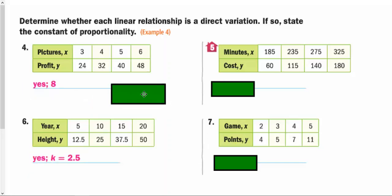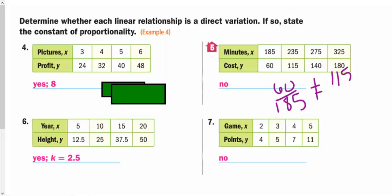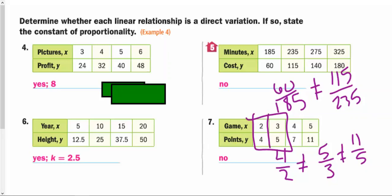For the fourth and sixth one, we get that they are direct variations. With a constant of proportionality of 8 and 2.5 respectively. However, on 5 and 7, we get that they are not direct variations. So, I think the yes is fine. We can look and divide and get all of them the same. But in 5 and 7, I want to look at the no's. So, if we look at 60 over 185, we realize that that is not the same as 115 over 235. Those numbers, one's roughly a little less than a third. And the other one's almost a half. So, we realize that those two aren't the same. In fact, number 5 is not even linear. If we do the same for number 7, we realize that 4 over 2 is definitely not the same as 5 over 3. And I think a lot of us are pretty okay with that. We also know it's not the same as 11 over 5. And in fact, once you see one pair not being the same, then you instantly can stop and say, oh, this is not a direct variation.